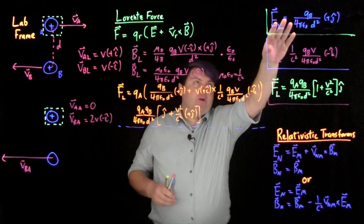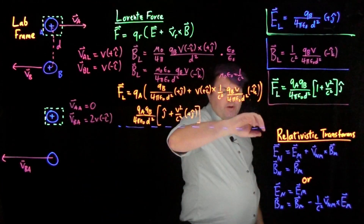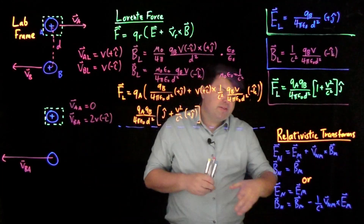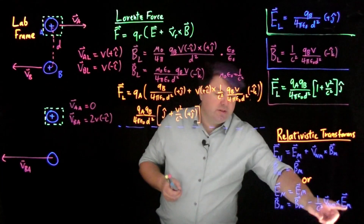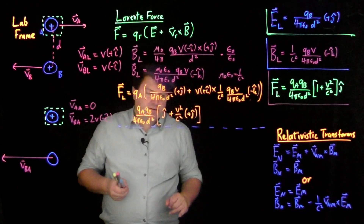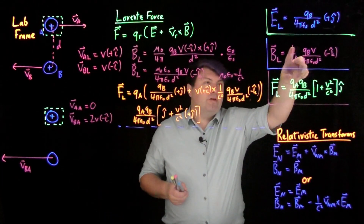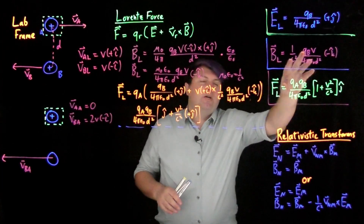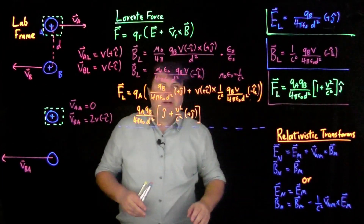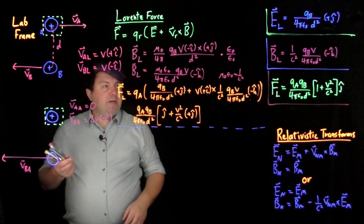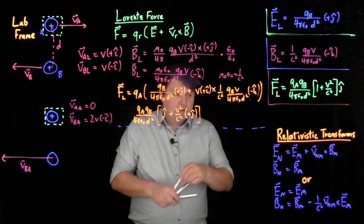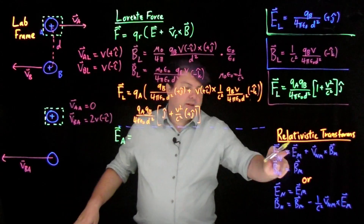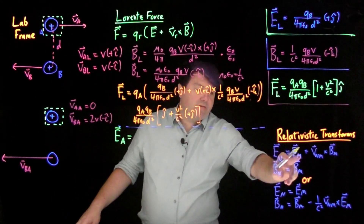Now we do our relativistic transforms to find all of these. Which transform do we use? We can use either the top or the bottom form, but the bottom has a (1/c²) × velocity term. If our velocity is much less than the speed of light, we use the top equation where the electric field dominates, so we don't need to invoke full relativistic speeds. In this case, we're finding the electric field in reference frame A starting from frame L, so everywhere we see M we replace it with L.